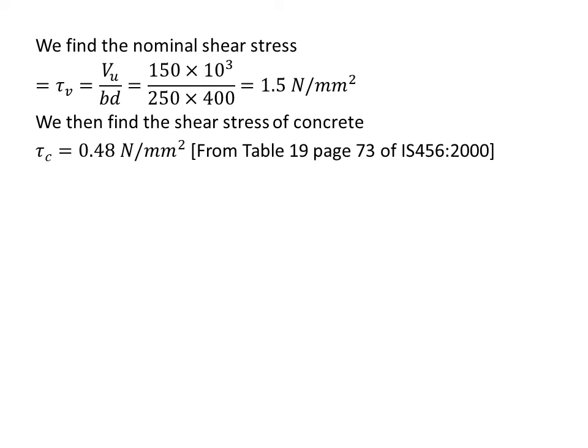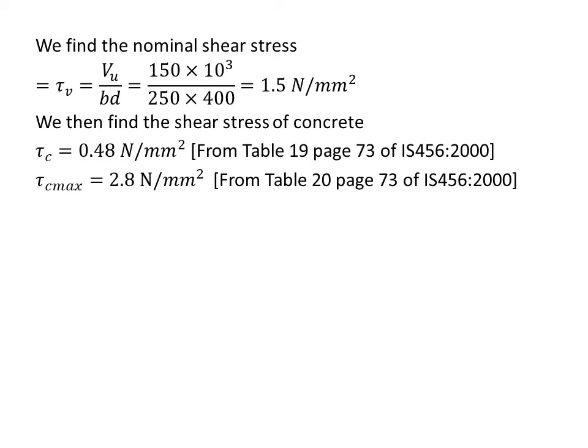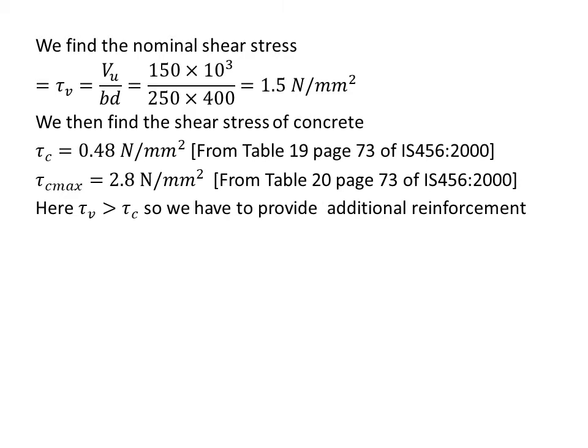Then we find the maximum shear stress of concrete, τC_max = 2.8 N/mm², from Table 20, page 73 of IS 456:2000. Checking the condition: τV is greater than τC, but τC is less than τC_max and τV is also less than τC_max. Since τV > τC, we have to provide additional shear reinforcement, otherwise chances of cracking will be more.